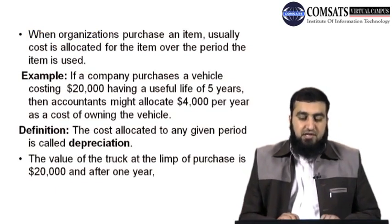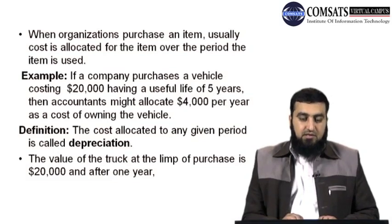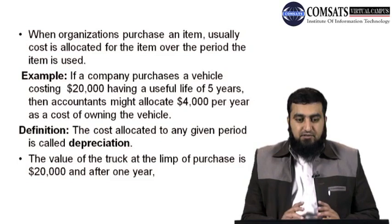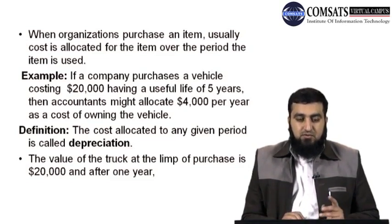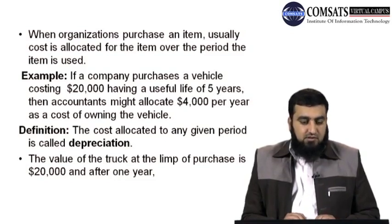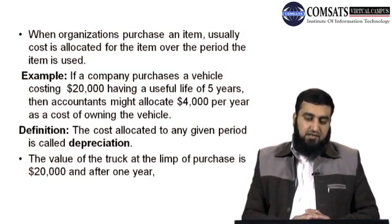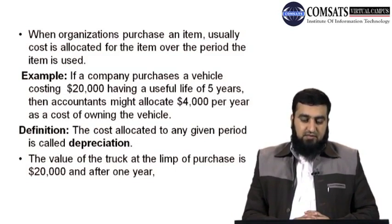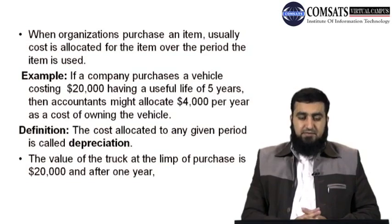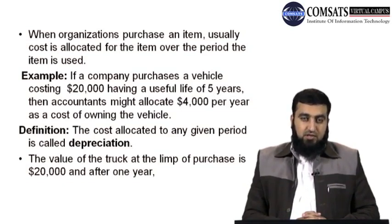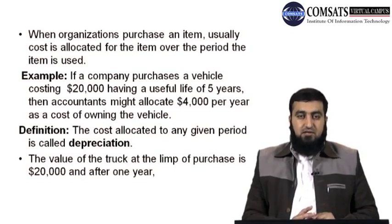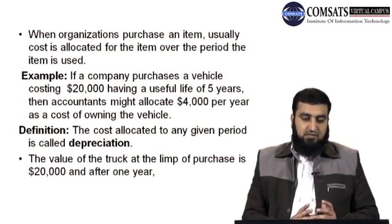When organizations purchase an item, cost is usually allocated for that item over the period it is used. When a company buys an item, some cost is included in it — as the item experiences wear and tear and becomes less efficient, its price decreases over time. For example, if a company purchases a vehicle costing $20,000 with a useful life of five years, accountants might allocate $4,000 per year as the cost of owning the vehicle.